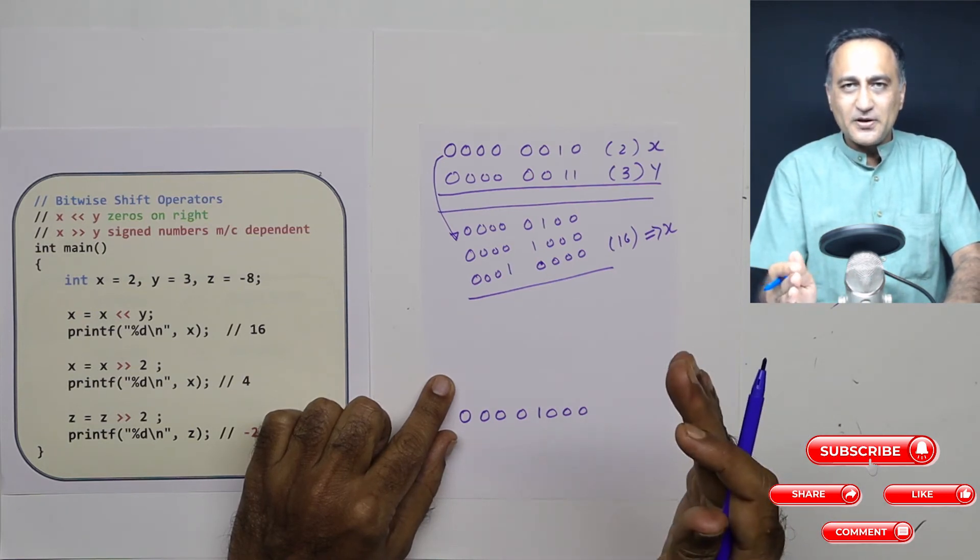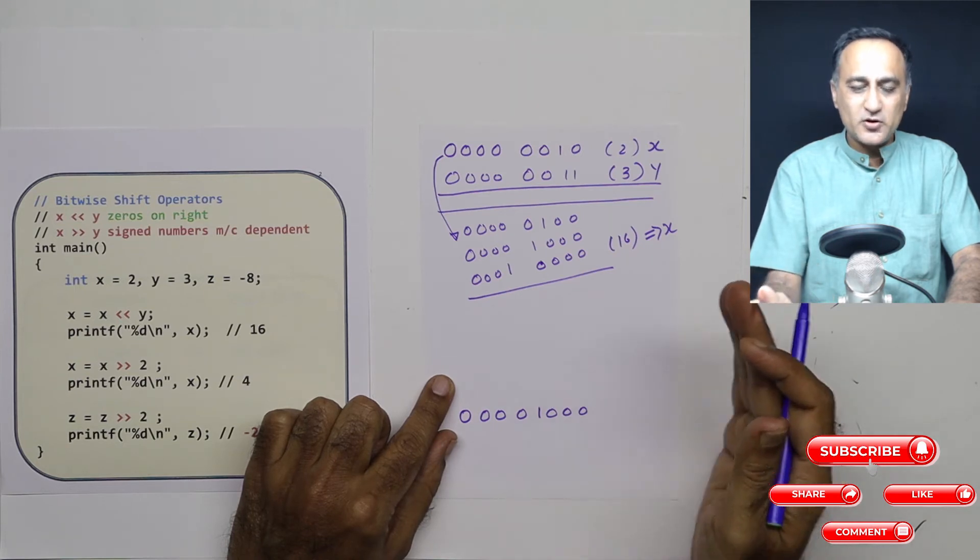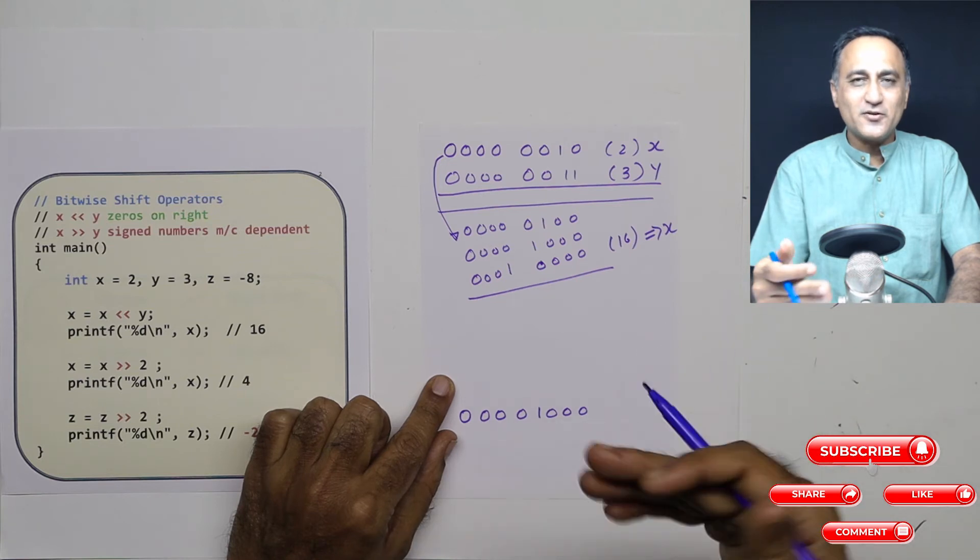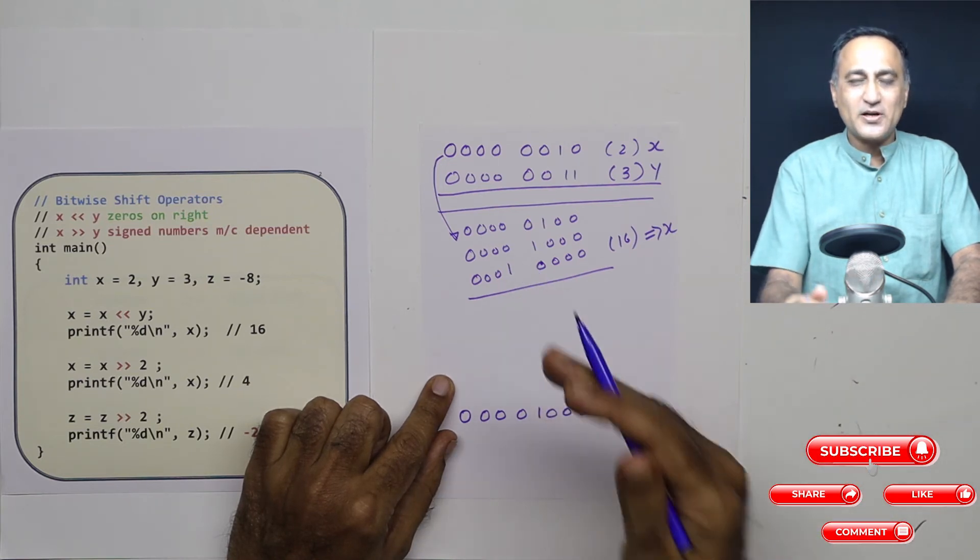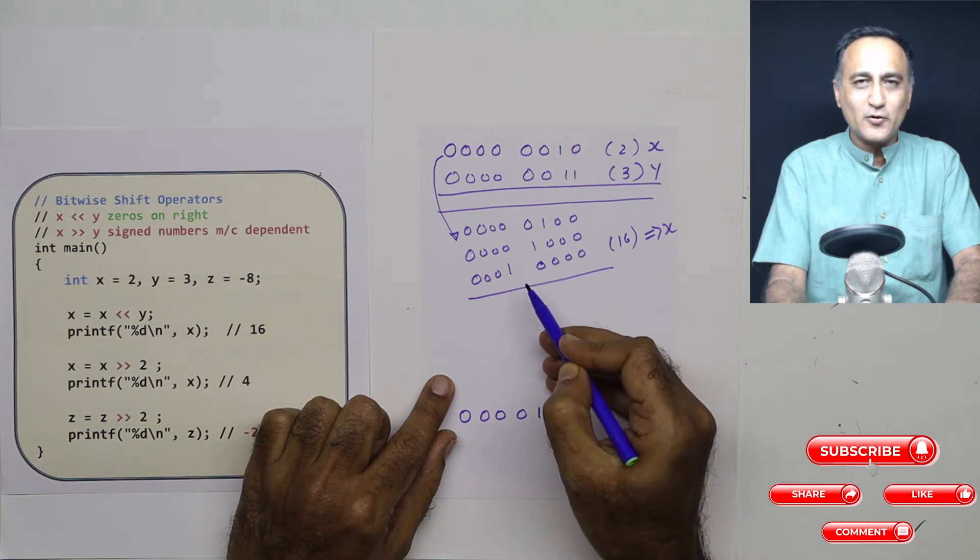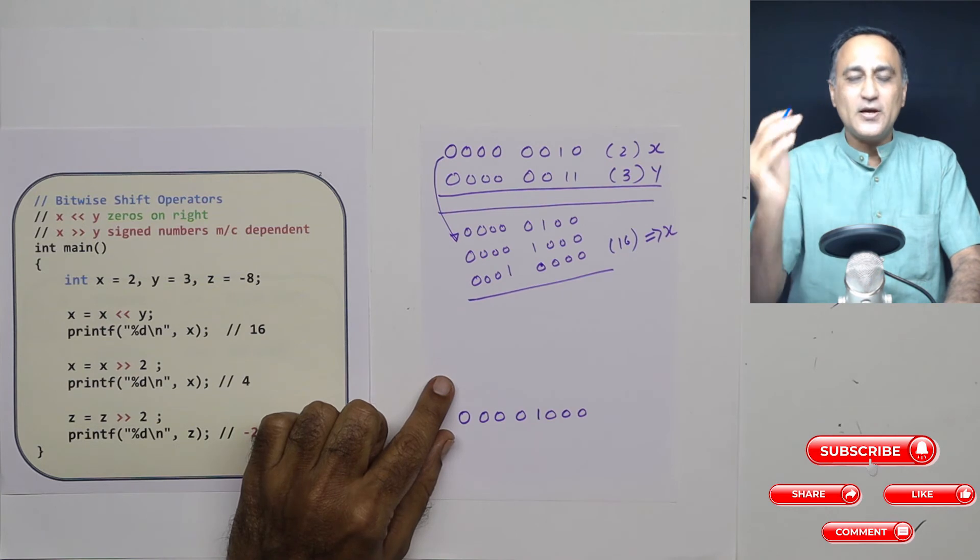When you shift a bit to the left once, it's as good as multiplying it by two. When you shift it twice, it's as good as multiplying it by four. When you shift it again, it's as good as multiplying it by two again. So it's two times two is four, four times two is eight, eight times two is sixteen. It goes to two raised to the power.